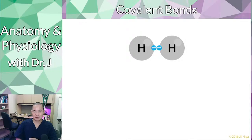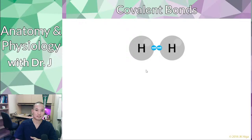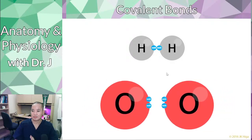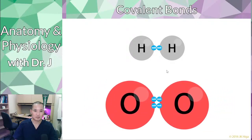Electron pairing is very important — electrons don't like to be by themselves. That's also the basis behind things we call free radicals, but that's a little advanced for this point. The main point is that electrons are very important for forming bonds between atoms.